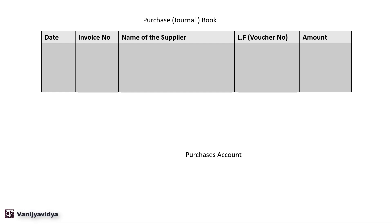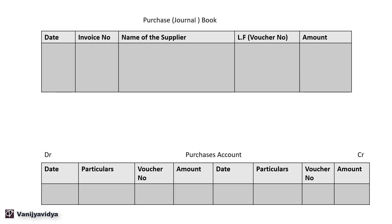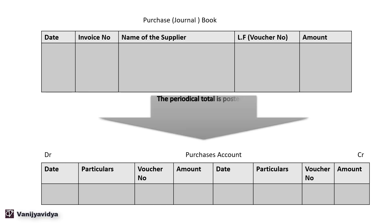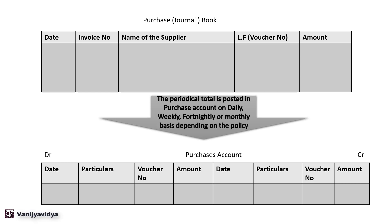The purchases account is a ledger account in the books of accounts, with debit and credit sides containing date, particular, voucher number, and amount. The periodical total is posted in the purchases account on a daily, weekly, fortnightly, or monthly basis depending on policy. Each credit purchase is first recorded in the purchase journal book, then the periodical total — daily, weekly, fortnightly (every 15 days), or monthly — is posted in the purchases account on the debit side.